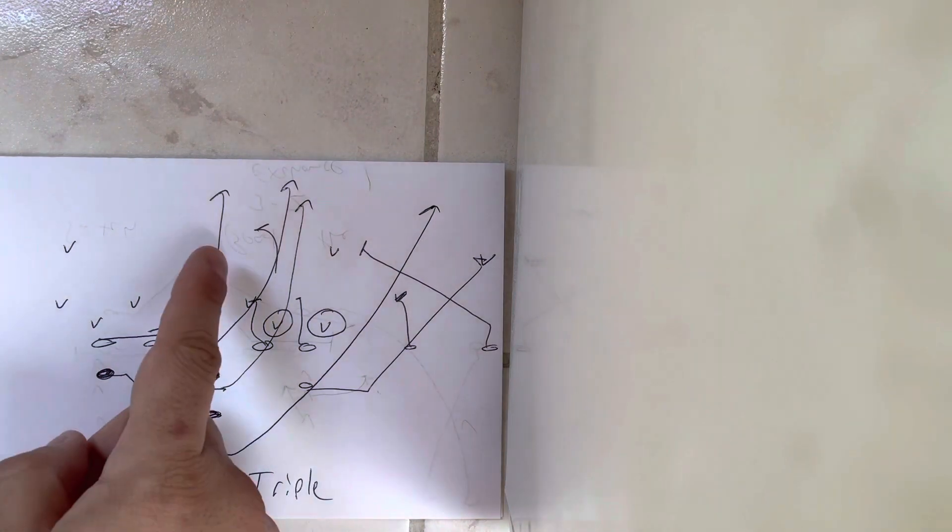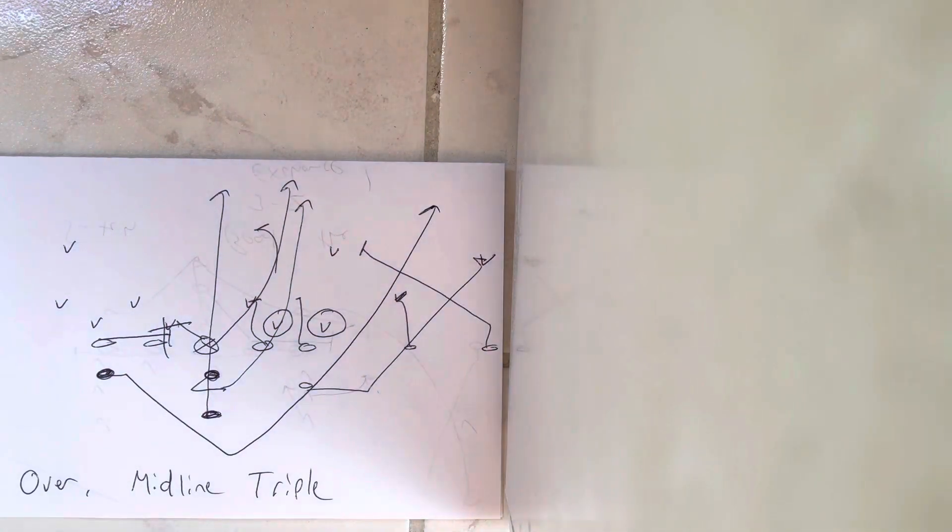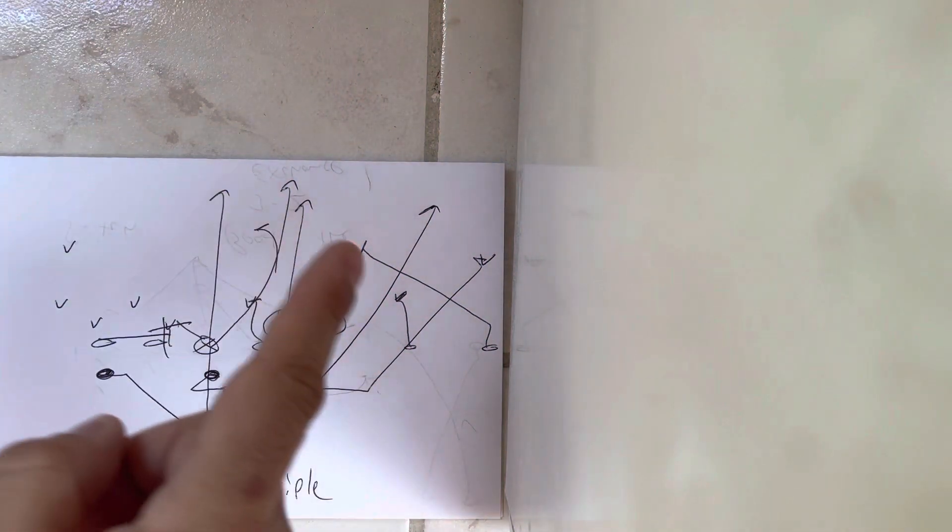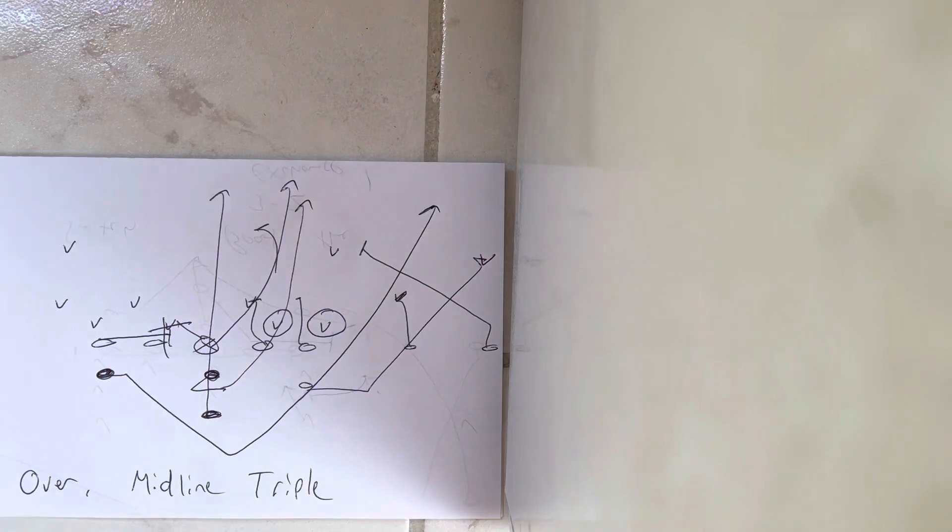This is what Paul Johnson did for years against single high safety defenses. He wanted to see if they would either slide the safety over and take a half-man disadvantage, or they would bring somebody over with the receiver to match the numbers.